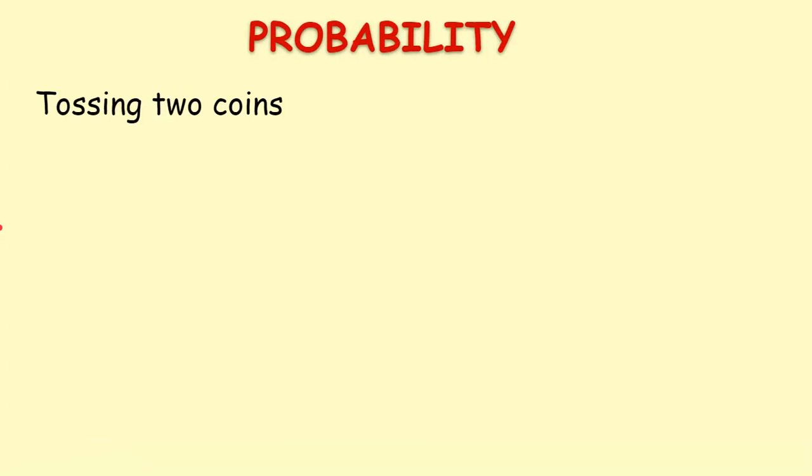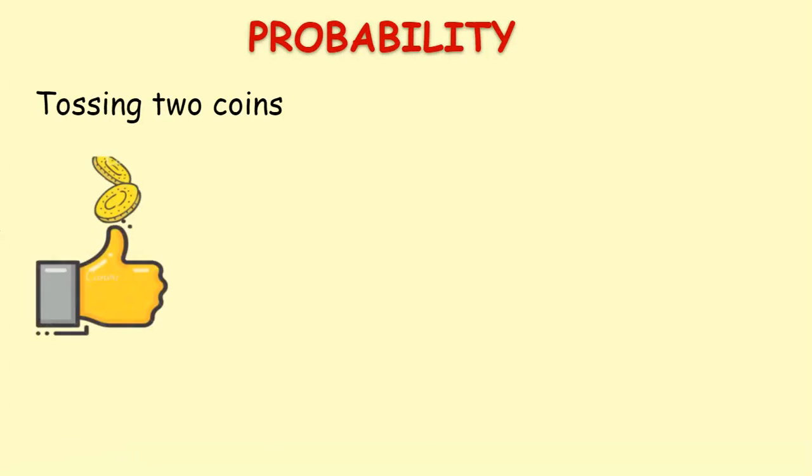Hello children, today let us see the probability of outcomes when two coins are tossed simultaneously. Now let us see the total possible outcomes when the two coins are tossed.